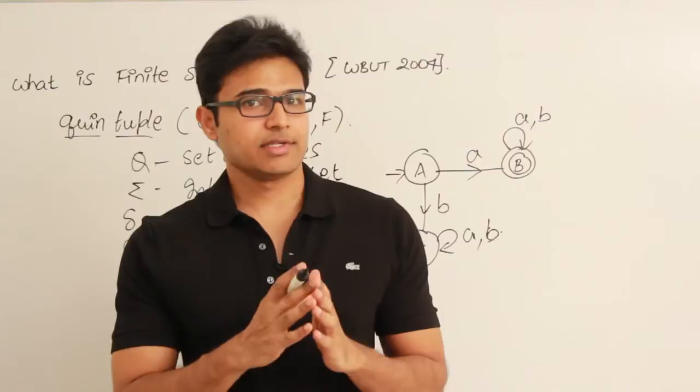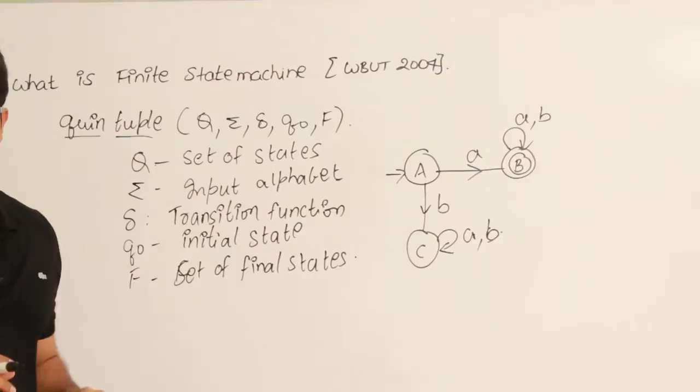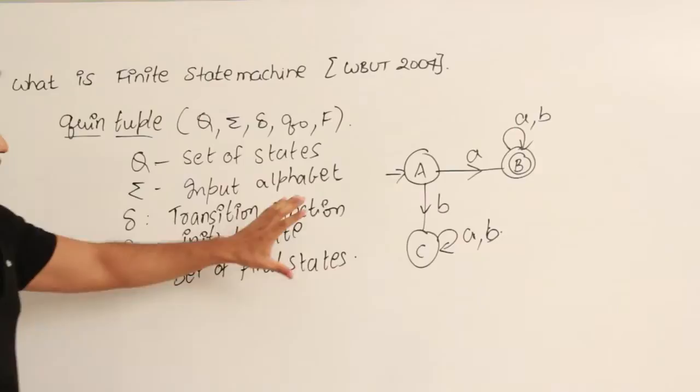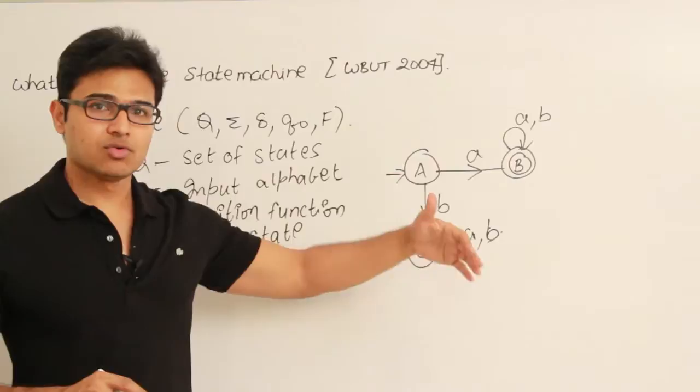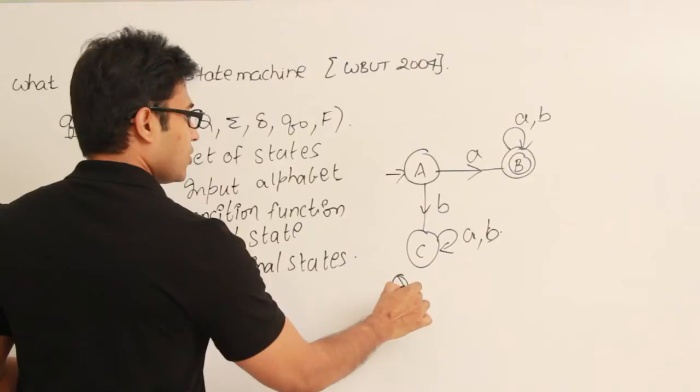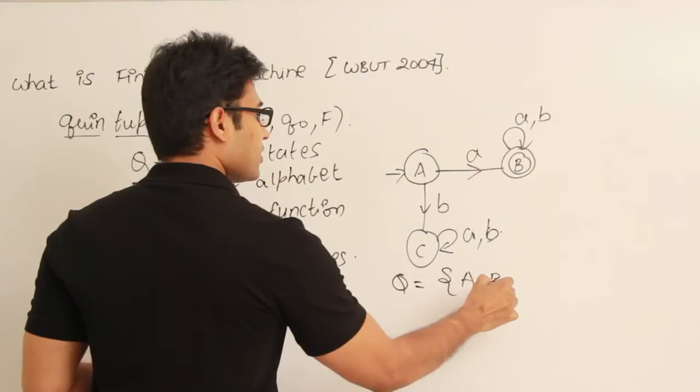Write the tuple as Q, sigma, delta, Q-naught, F, then describe each one by one. After that, give this example and explain it. In this example, Q is the set of states — here there are three states: a, b, and c.